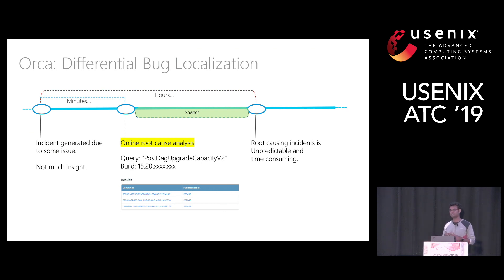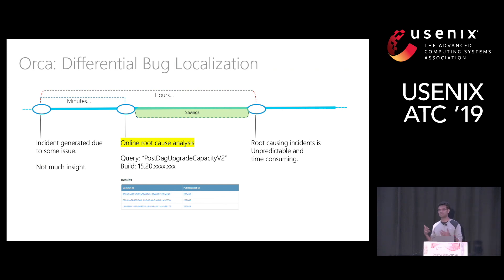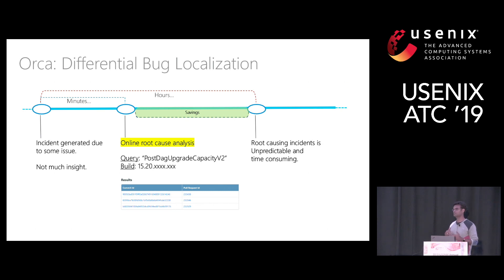Orca basically takes two inputs. One is any textual description of the symptom — in this case, post-tag upgrade the capacity module in Exchange Online has broken. The other is the symptomatic build number. Orca takes these two inputs and tries to come up with a ranked list of commits or pull requests which potentially might have introduced the bug and caused the service to be broken.